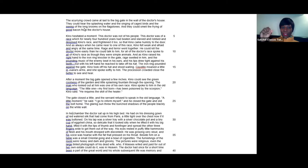As Kino raised his right hand to the iron ring knocker on the gate, rage swelled in him, and the pounding music of the enemy beat in his ears, and his lips drew tight against his teeth. But his left hand reached to take off his hat. The iron ring pounded against the gate. Kino took off his hat and stood waiting. Coyotito moaned a little in Juana's arms, and she spoke softly to him. The procession crowded close to see better and hear.